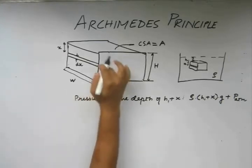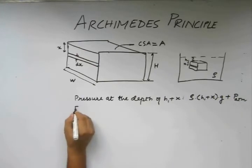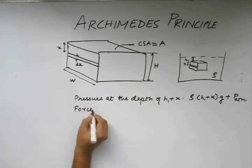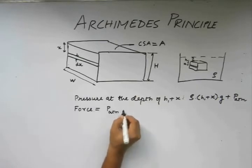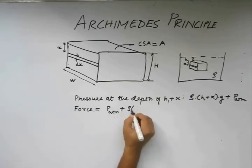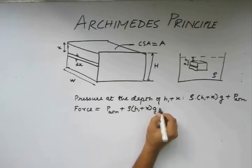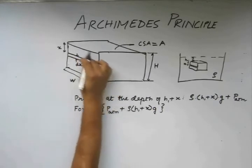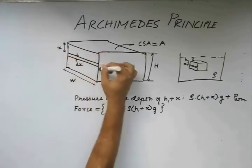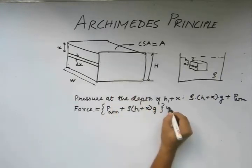The force acting on this element due to this pressure is P_atm plus ρ times (h1 plus x) times g, the entire thing multiplied by this area. This area is going to be this width and this small width of dx, which is W times dx.